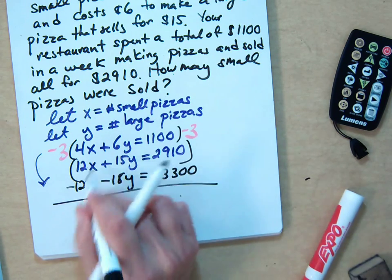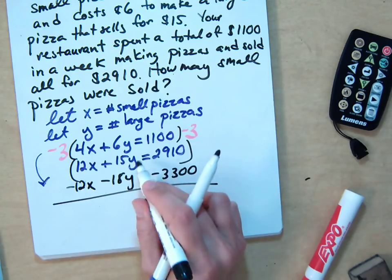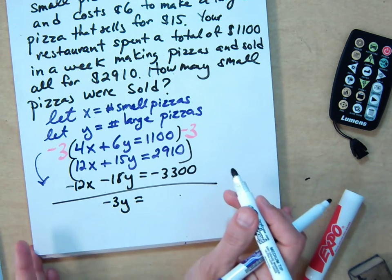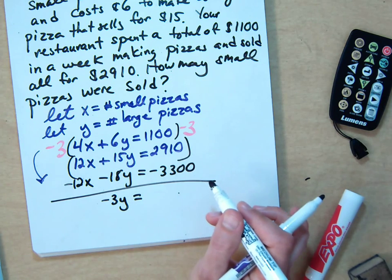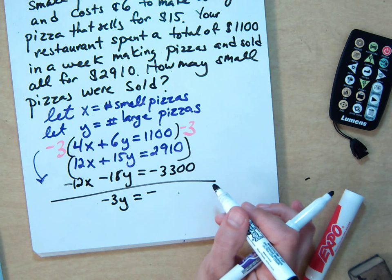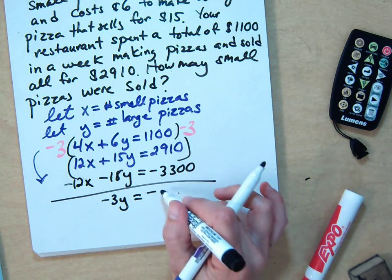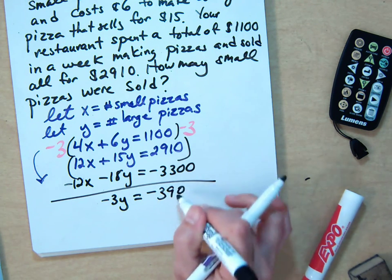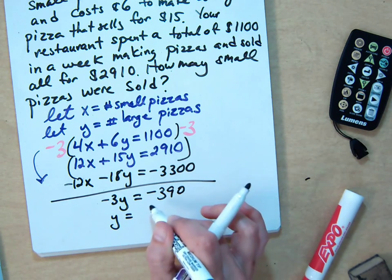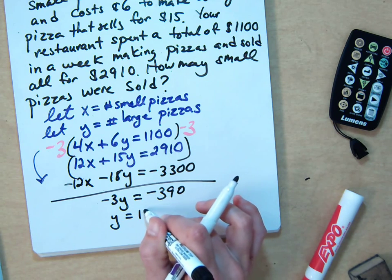And then you're just going to, the x's will go away. The y's, you'll get negative 3y. And someone do, let's see, 29, 10. It's going to be a negative answer. What is that going to be? 90 plus 390. Okay, negative 390. Divide by negative 3, of course. So you get positive 130.